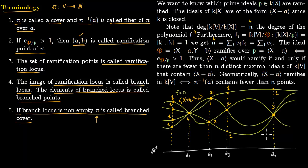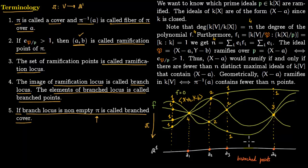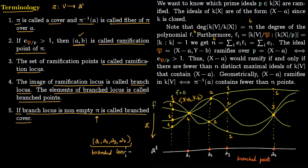The set of all ramification points forms the ramification locus. Their images on A¹ — the points a₁, a₂, a₃, a₄ — are called branch points, and together they form the branch locus. Since the branch locus is non-empty, the cover π is called a branched cover.